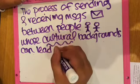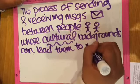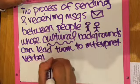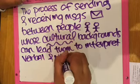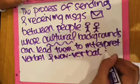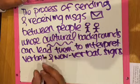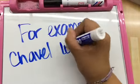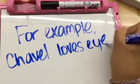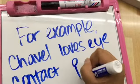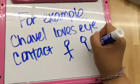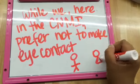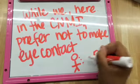Now let's talk about intercultural communication. Intercultural communication is the process of sending and receiving messages between people whose cultural backgrounds can lead them into interpreting verbal and nonverbal signs differently. Take Ms. Chevelle for example — to her, eye contact is very important when communicating. But here in the CNMI, we don't make eye contact with our elders as a sign of respect.